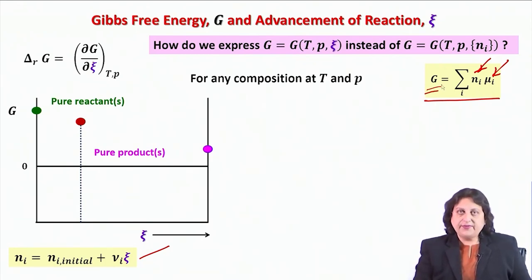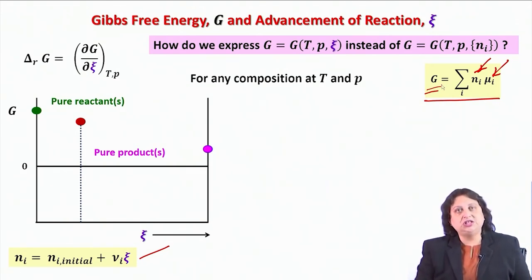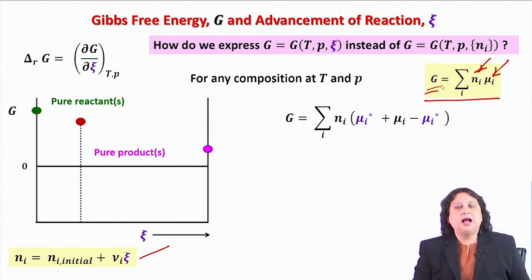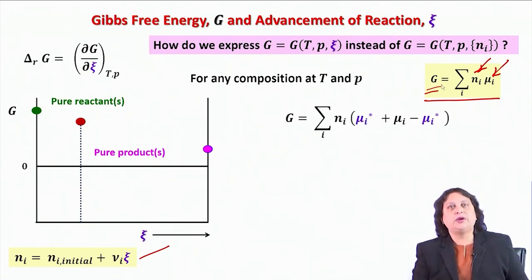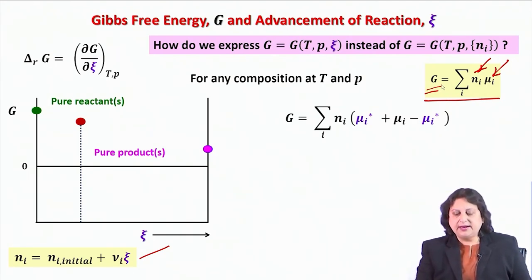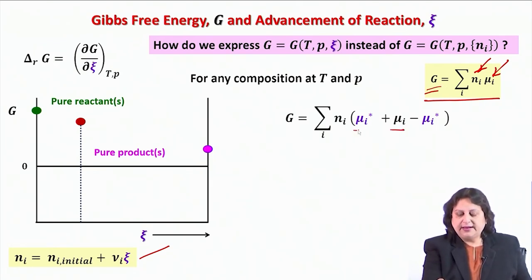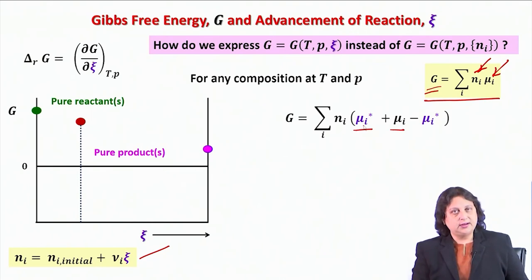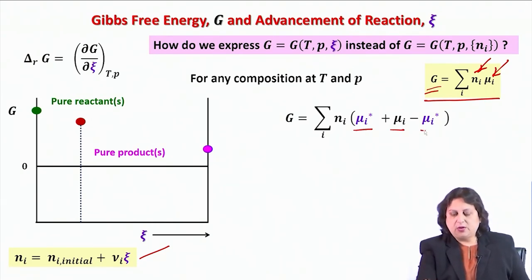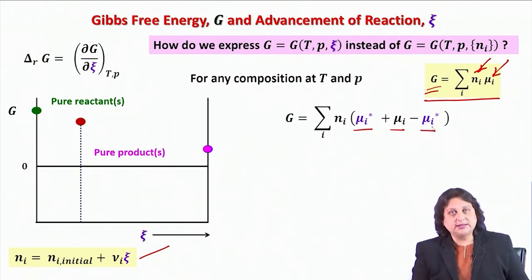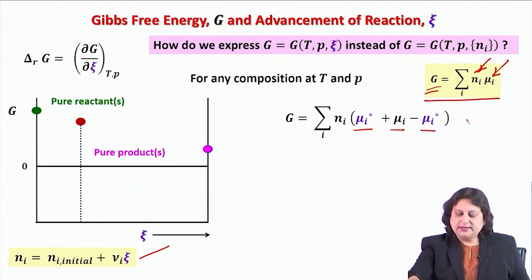To derive a functional relationship between G and ψ, I am going to rewrite the Gibbs free energy relation in the following way. Instead of just μi, I have added μi*. And since I have added μi*, I will also have to deduct μi* to maintain this equation.